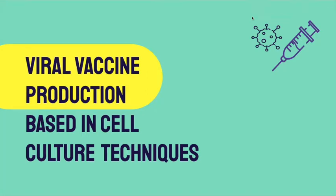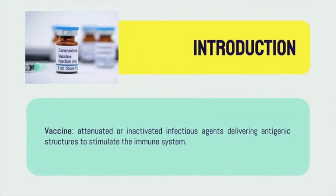In this video we will talk about viral vaccine production based in cell culture techniques. First, we need to define what a vaccine is. A vaccine is an attenuated or inactivated infectious agent that delivers antigenic structures resulting in the stimulation of the immune system.